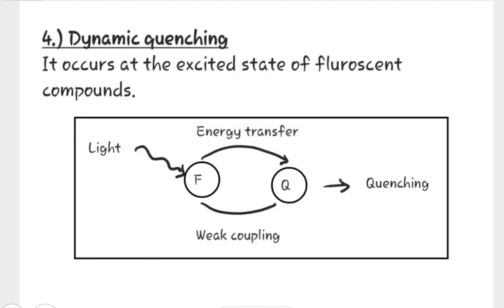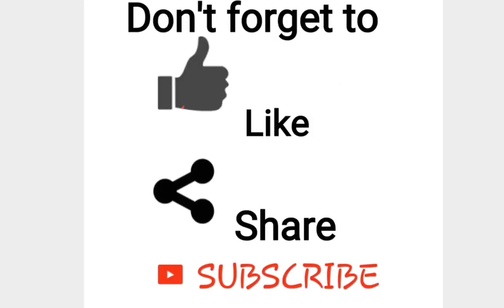Now let us see what is dynamic quenching. Dynamic quenching is just opposite to static quenching. It occurs at the excited state of fluorescent compounds. In dynamic quenching, there is weak coupling between the fluorescent substance and a quencher, and when the fluorescent substance is in an excited state, there is a collision between the fluorescent substance and the quencher which causes the quenching effect.